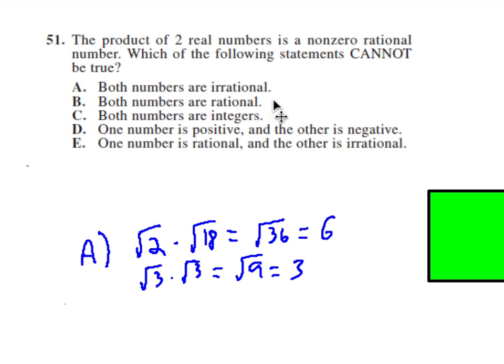For B, if you multiply two rational numbers together, you're going to get a rational number. Same thing with integers. If you multiply two integers together, you're going to get an integer, and an integer is definitely a rational number. For D, one number is positive and the other one is negative. Well, this has absolutely nothing to do with being rational and non-rational, so that's not it.